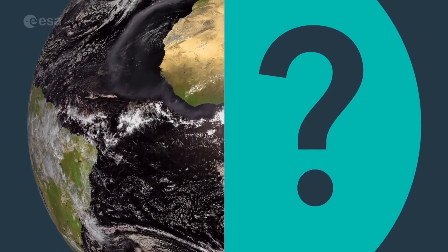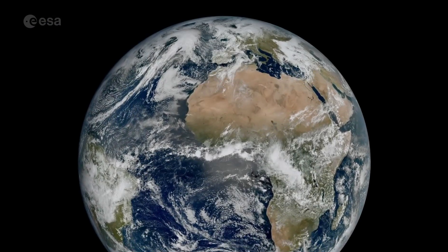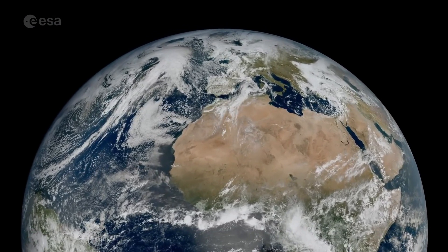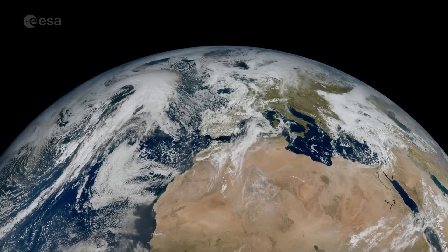So, are you ready for the big reveal? This is the first image from the Meteosat third generation imager, showing Europe, Africa and the Atlantic in remarkable detail.